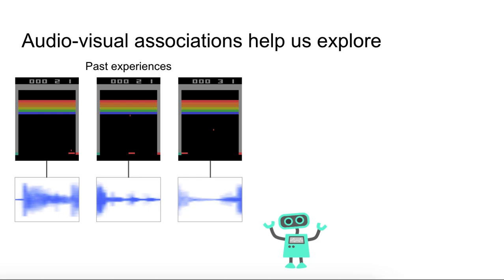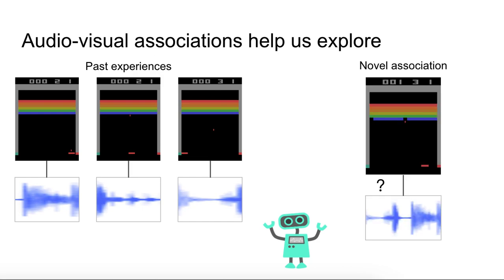An agent learns audio-visual associations based on what it has seen in the world. For example, in the game Breakout, the agent might have learned that a certain sound goes together with the visual of the ball hitting the paddle. During exploration, the agent might encounter an association it has not yet learned, such as between the ball hitting a brick and a different sound, in which case the agent receives a reward for uncovering this novel association.